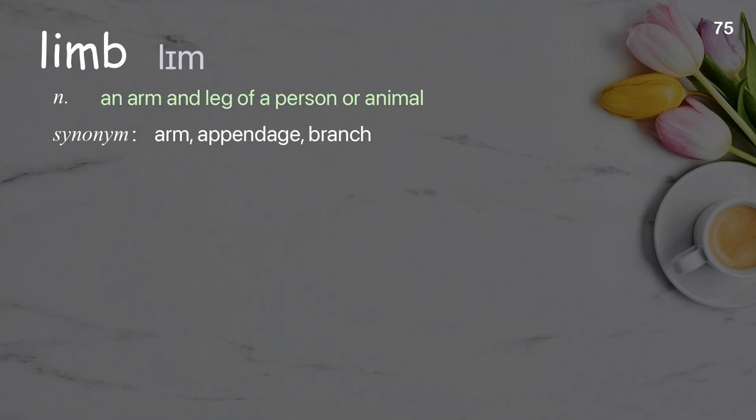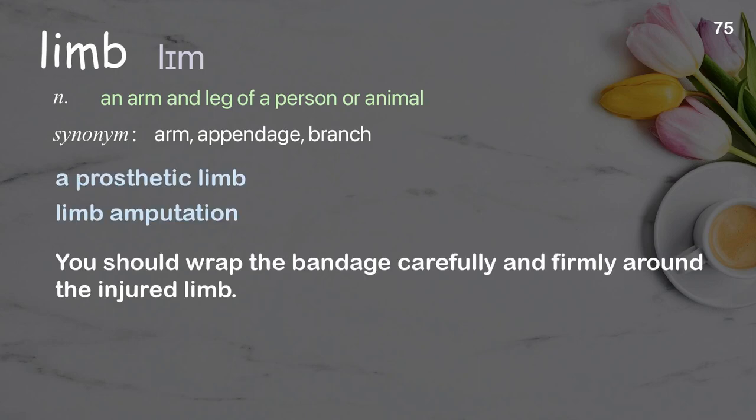Limb: an arm and leg of a person or animal. Examples: a prosthetic limb; limb amputation. You should wrap the bandage carefully and firmly around the injured limb.